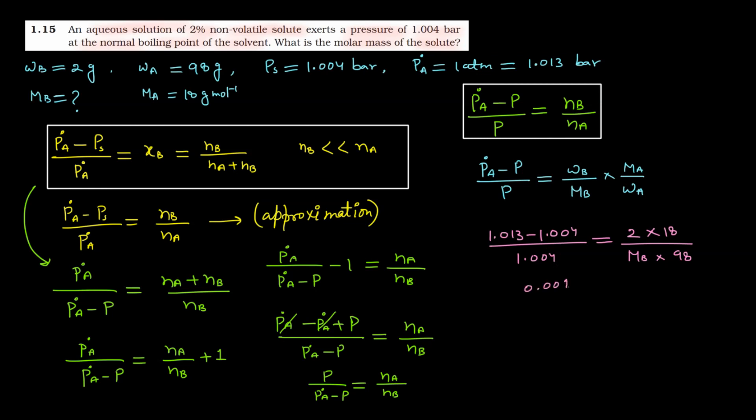From here we get 0.009/1.004 equals 36/(mb × 98). You have to calculate the value of mb. So mb equals 36/98 times 1.004/0.009. Multiplying this gives 36.144/0.882. So you get the value of mb as 40.97 gram per mole. This is the molar mass of solute. This is the answer of this question.